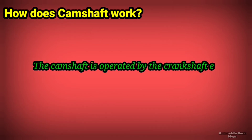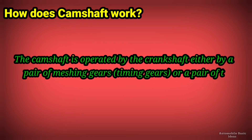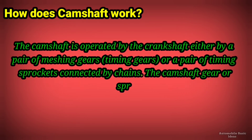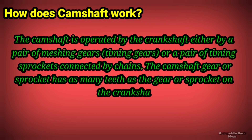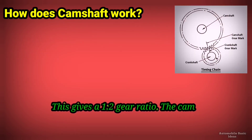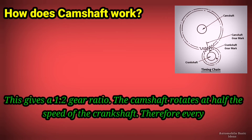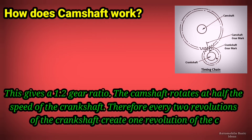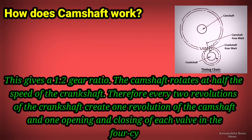The camshaft is operated by the crankshaft either by a pair of meshing timing gears or a pair of timing sprockets connected by chains. The camshaft gear or sprocket has twice as many teeth as the gear or sprocket on the crankshaft, giving a one-to-two gear ratio. The camshaft therefore rotates at half the speed of the crankshaft, so every two revolutions of the crankshaft create one revolution of the camshaft and one opening and closing of each valve.